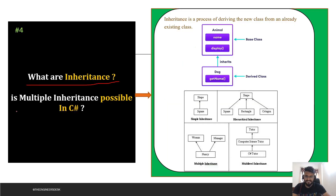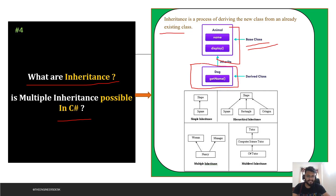The next question is: what is inheritance, and is multiple inheritance possible in C#? Inheritance is a process of deriving a new class from an already existing class — inheriting its features. For example, if Animal is your base class with properties like name and display, and Dog is your derived class, Dog can inherit from Animal and directly use all the properties of the Animal class.